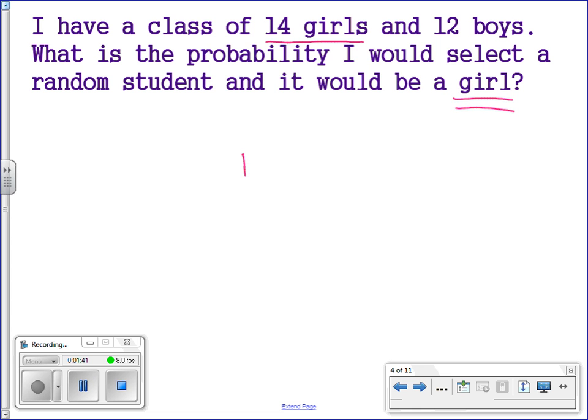So 14 is going to be in my numerator divided by the total number of students. Well, there are 14 girls and 12 boys, so 14 plus 12 is equal to 26. You can leave your answer as a fraction like this or you can simplify it as a decimal, which would be 0.54, which is also equal to 54%. So there are three ways that you could write this.